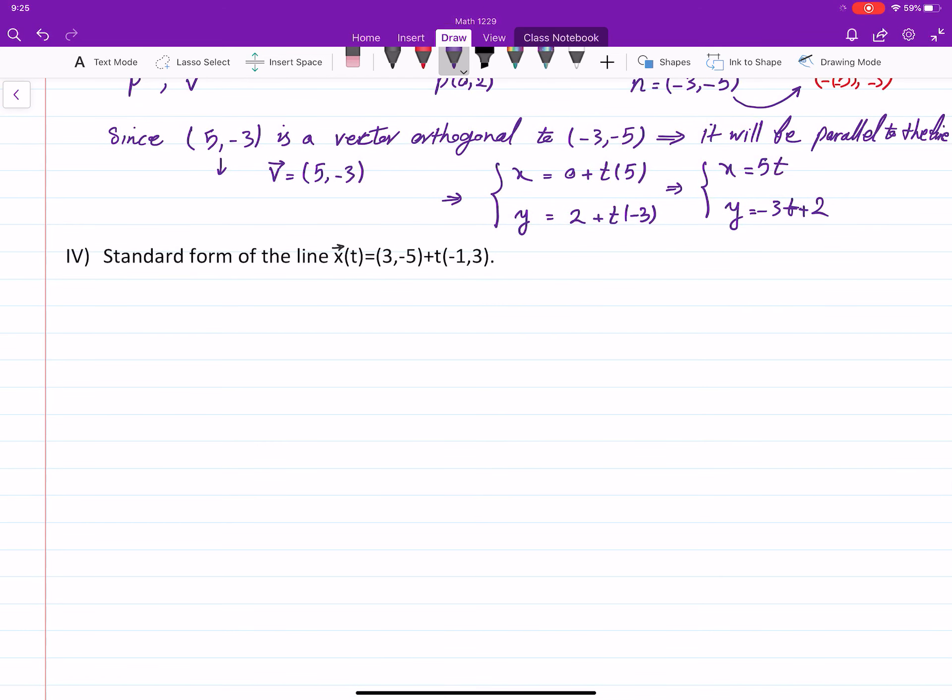How about the last part? Okay, we are looking for a standard form. So when you see standard form, that means that you need a point, you need a normal vector. But what is given about this line? This line, for this line, point parallel form is given. Point parallel form given means that right away, we have a point, 3, negative 5. Remember, P plus TV, and we have a parallel vector.